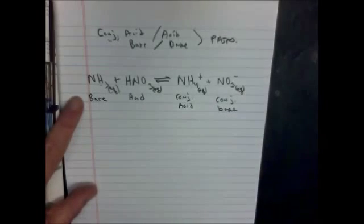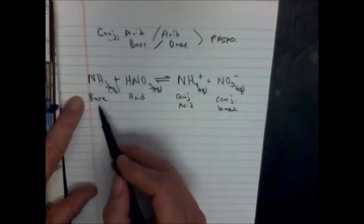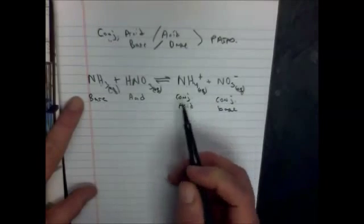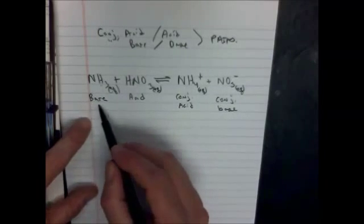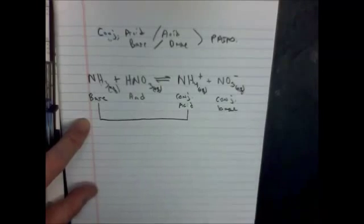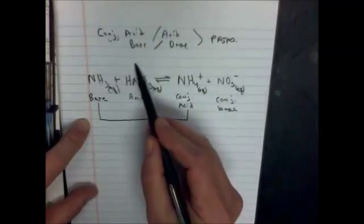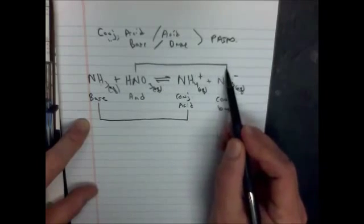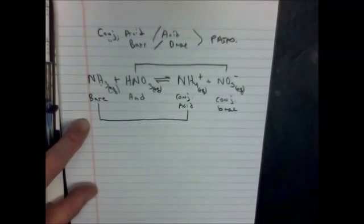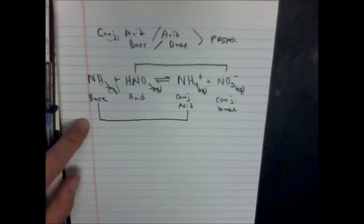And the last thing we need to do is draw a line between the pairs. So the ammonia goes with the ammonium, and the nitric acid goes with the nitrate. And there we go. We have this equation labeled for the conjugate acid base pairs.